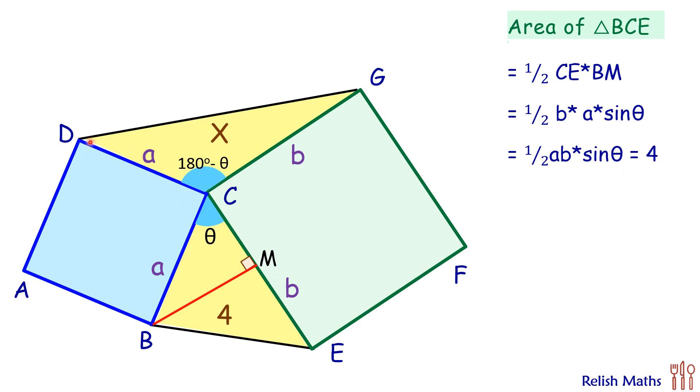the perpendicular distance from D on CG. For the same, we'll extend CG and draw a perpendicular from D on CG. So area of triangle DCG